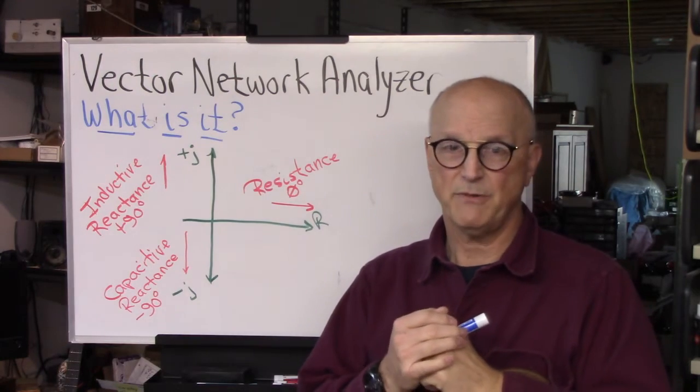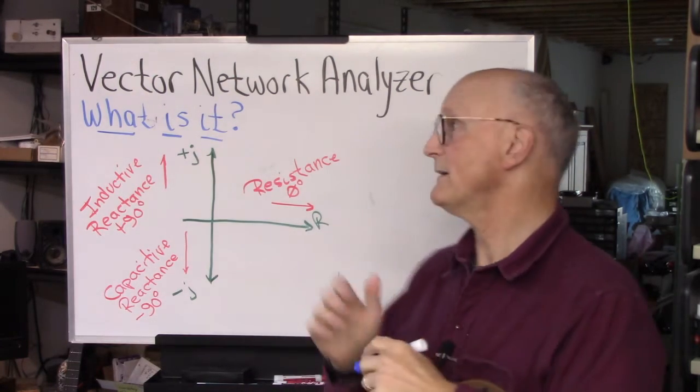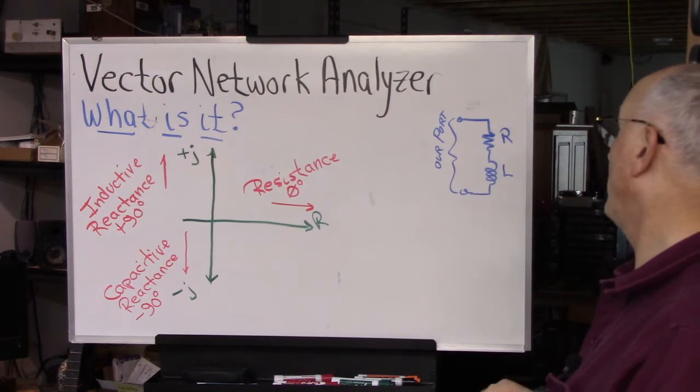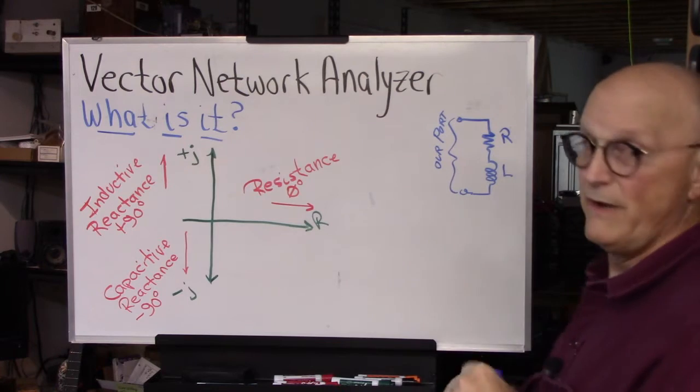Now, let's consider the example of a resistor and an inductor in series. It's a very simple network. We have one single port. We have a resistor. We have an inductor.